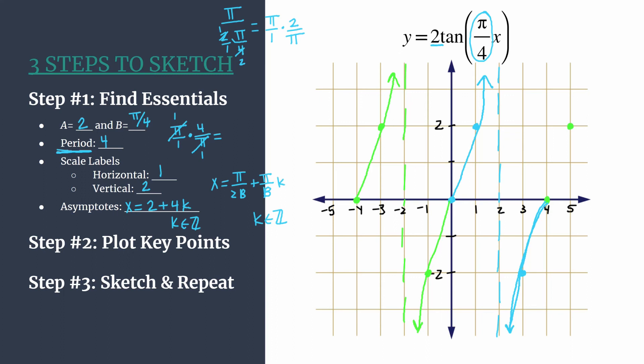And if you wanted to, you could continue out both ways. But this is two nice cycles of tangent for this particular equation, y equals two tan of pi over four x.